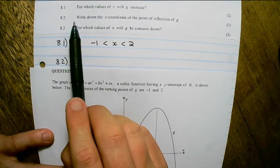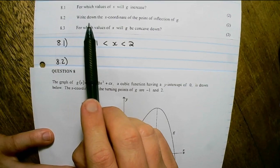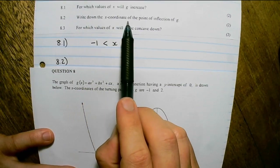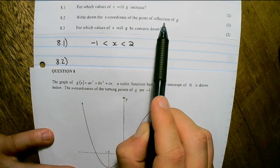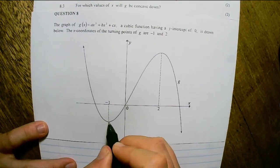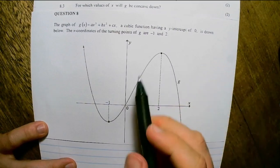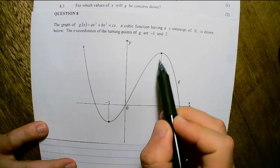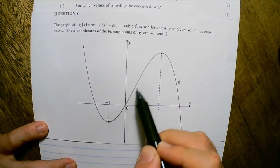The second question reads, write down the x coordinate of the point of inflection of g. Now on the diagram, the point of inflection is exactly in the middle of the turning points.